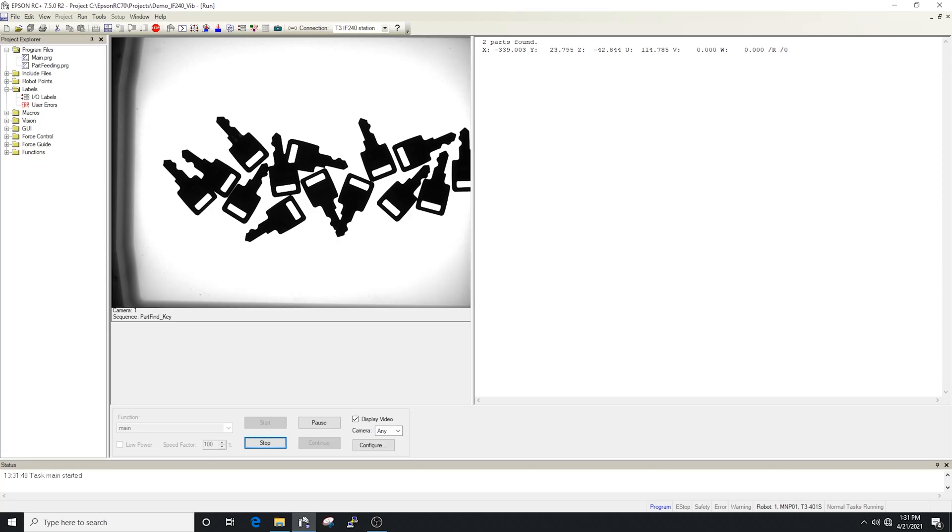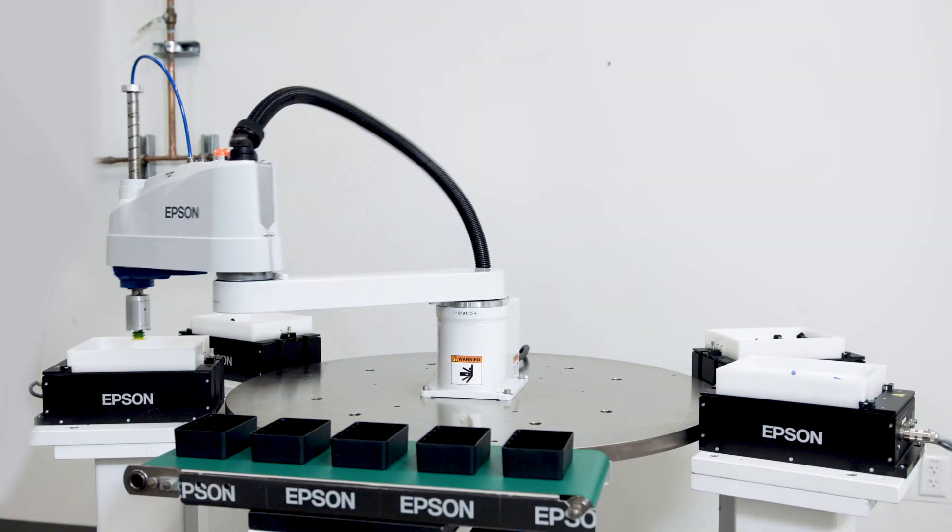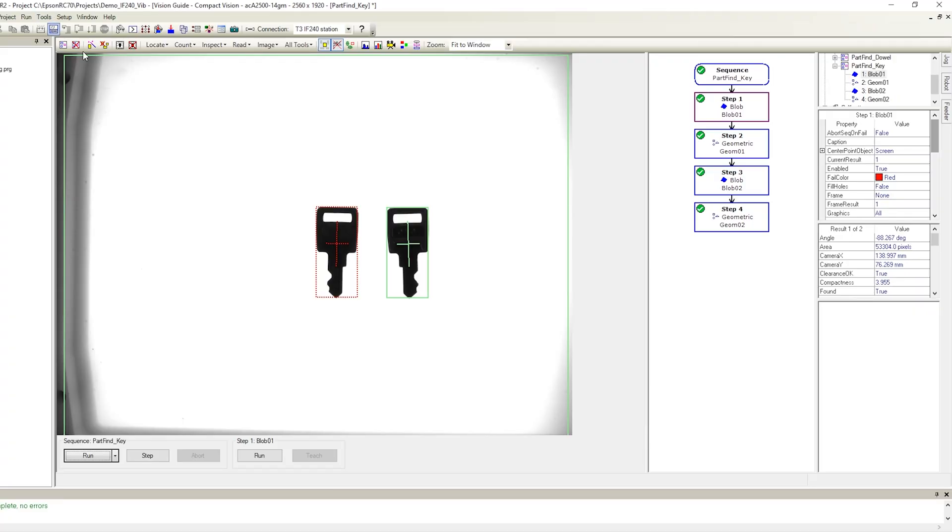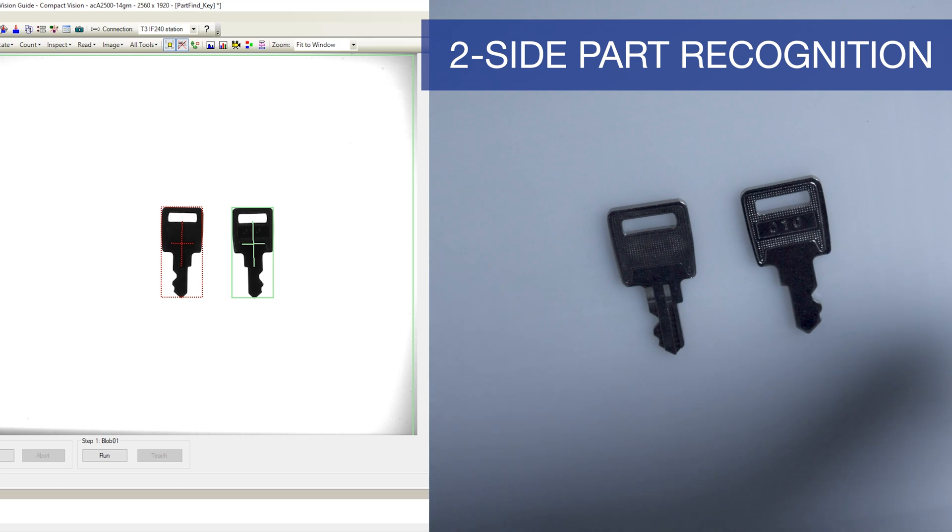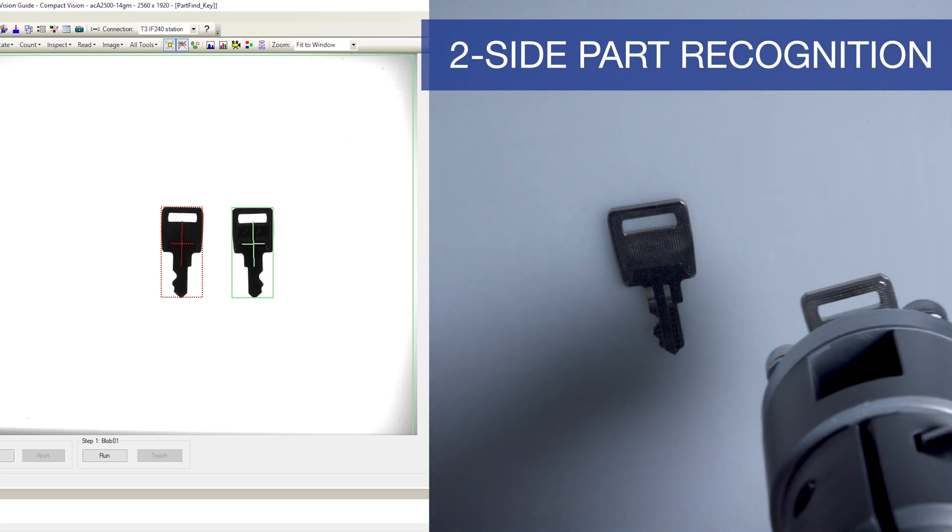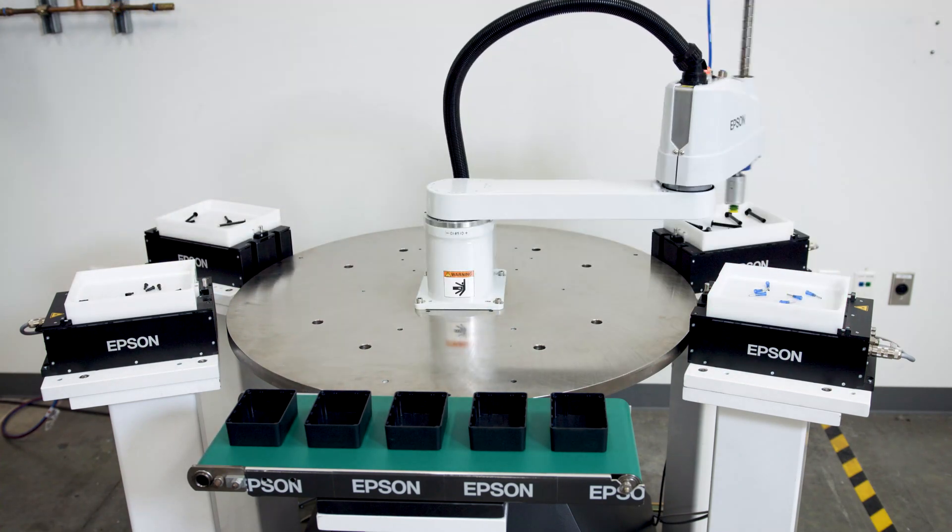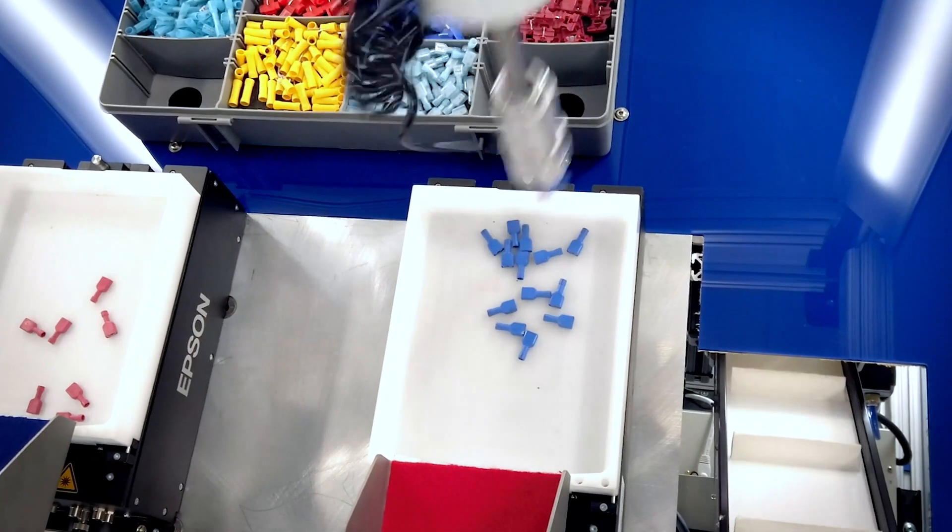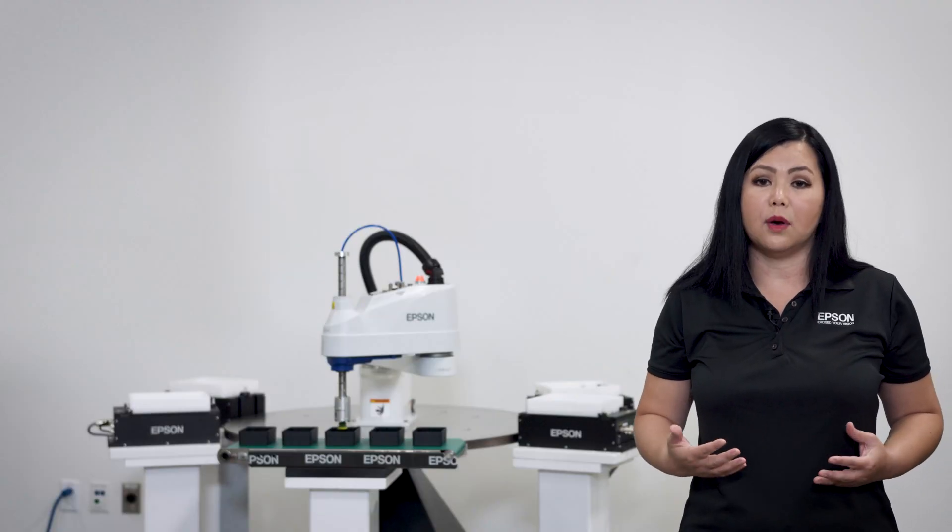IntelliFlex software offers multiple options designed to meet most any automation requirement. The comprehensive software enables two-side part recognition and for the Epson robot to pick up to four parts per feeder. The robot can also pick from four different feeders or two robots can pick from the same feeder. The possibilities are almost endless.